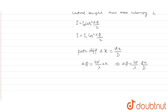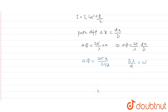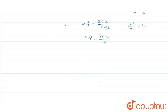Now, Δφ will be 2π x upon (Dλ / d). We can write it this way, and we know that Dλ / d is equal to the fringe width. So, this formula becomes Δφ = 2π x / fringe width. Now, we will put this into the formula for intensity: I = I₀ cos² (Δφ / 2), where I is I2 and I₀ is I1.